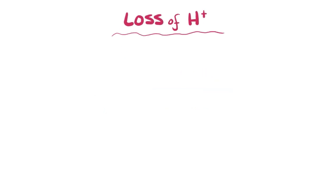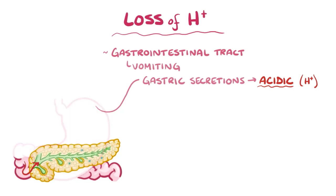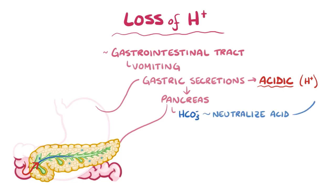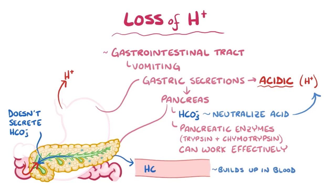Loss of hydrogen ions can happen either from the gastrointestinal tract or from the kidneys. The first case most commonly happens during vomiting, because the gastric secretions are very acidic, meaning that they have lots of hydrogen ions. Normally, as gastric secretions flow into the pancreas, they're met with bicarbonate secretions, which neutralize the acid so that pancreatic enzymes like trypsin and chymotrypsin can work effectively. So during vomiting, not only is the stomach acid lost, but the pancreas doesn't secrete bicarbonate into the intestines, and so it builds up in the blood instead.